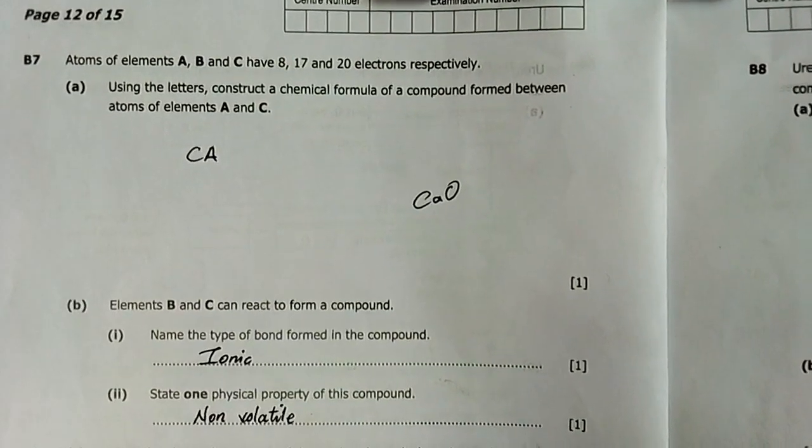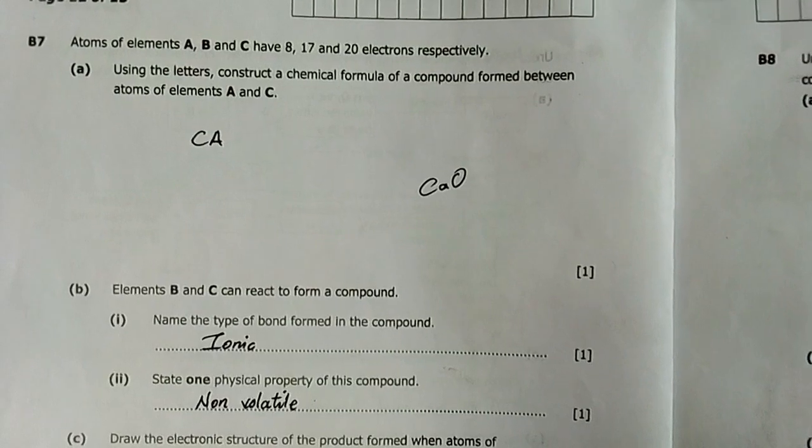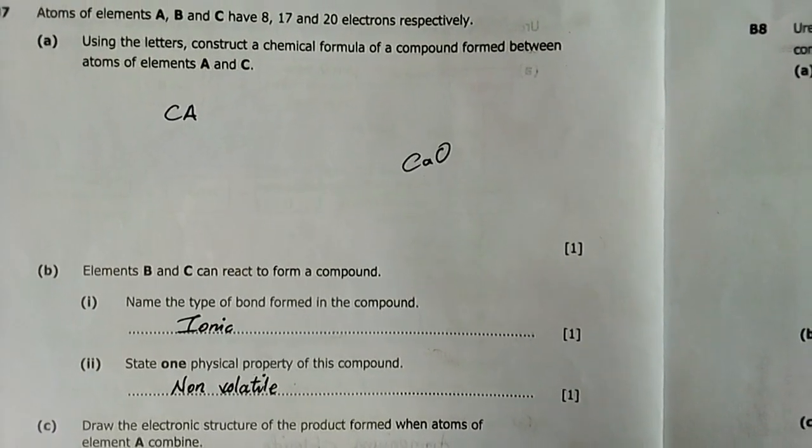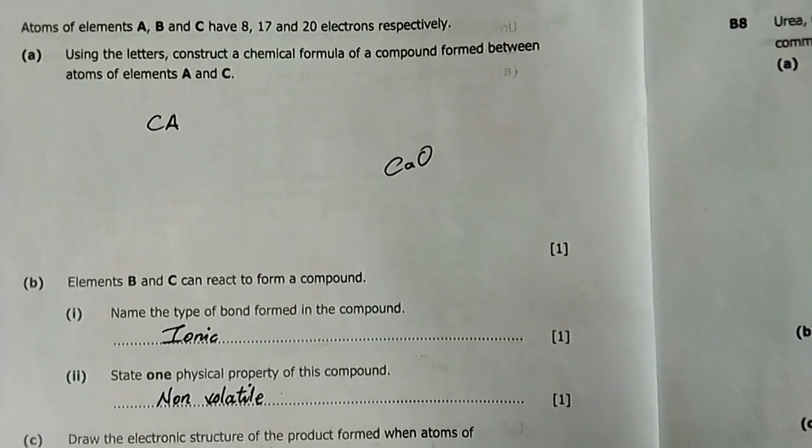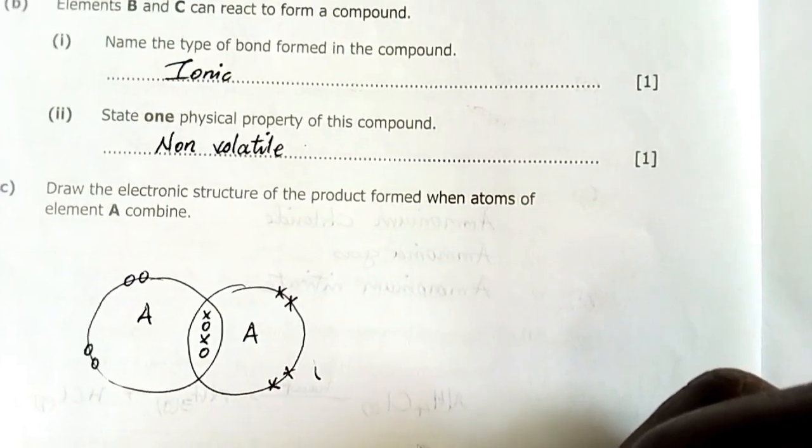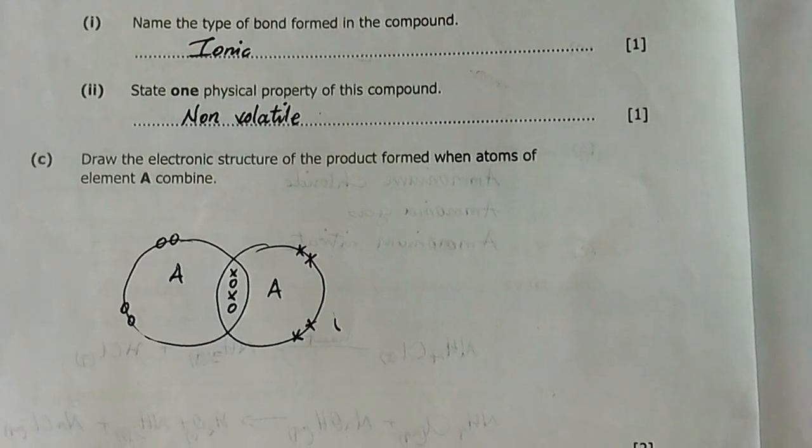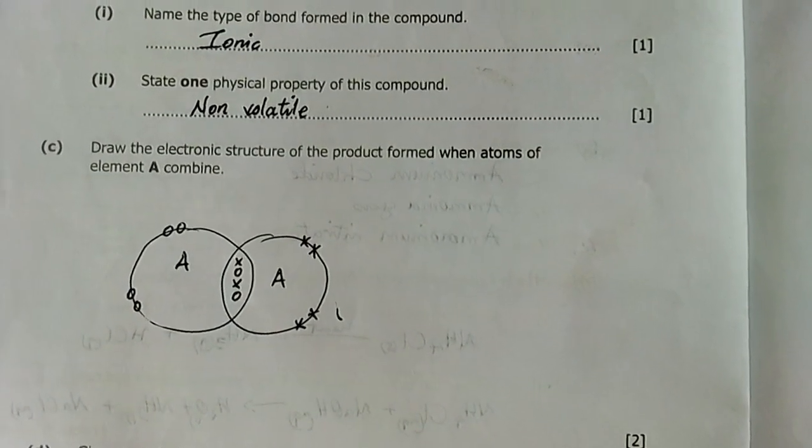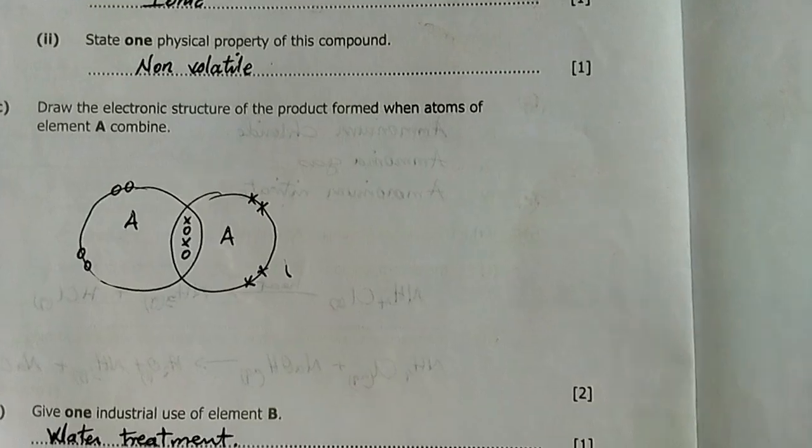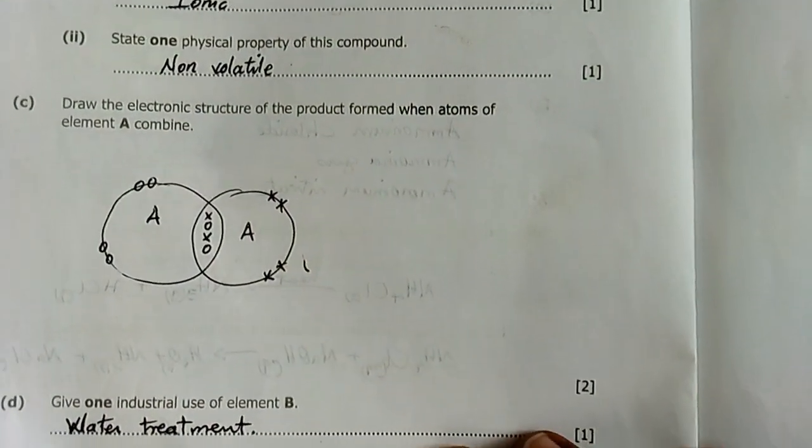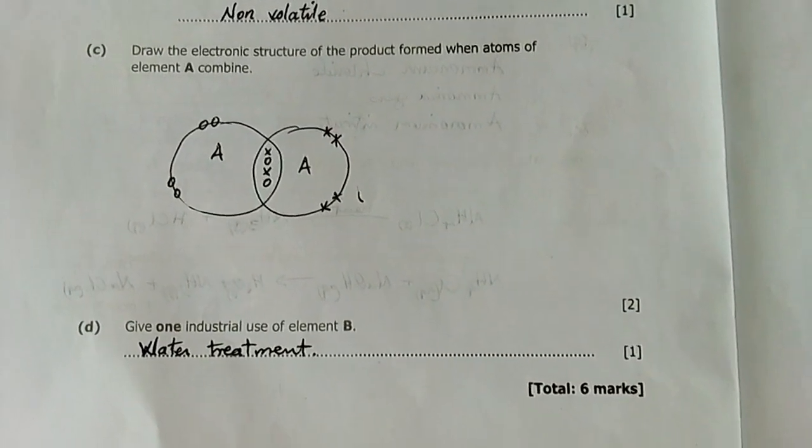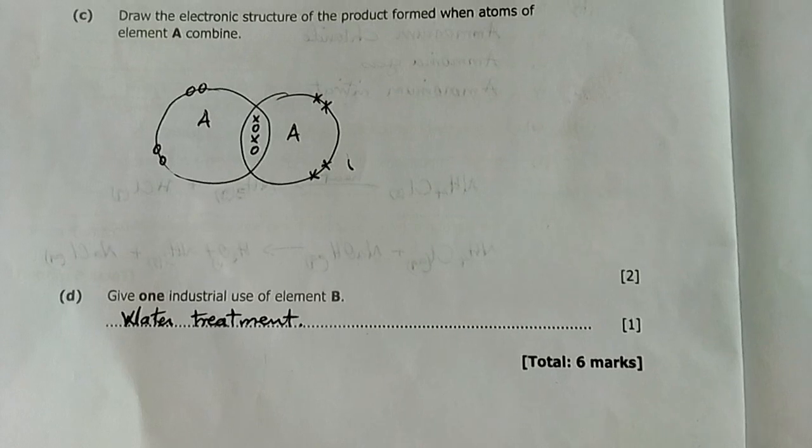Question B: Elements B and C react to form a compound. B with 17 electrons is likely a halogen like chlorine, and C is calcium, so calcium chloride. Name the type of bond formed—ionic. State one physical property—it's non-volatile. Question C: Draw the electron structure of the product formed when atoms of A combine. This would be a double bond between the two oxygen atoms. Question D: Give one industrial use of element B—water treatment using chlorine. Six marks scored.